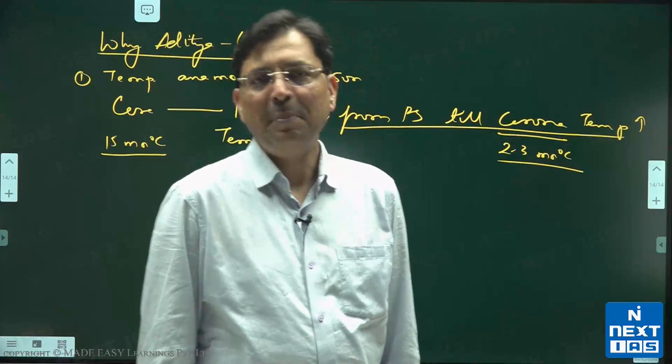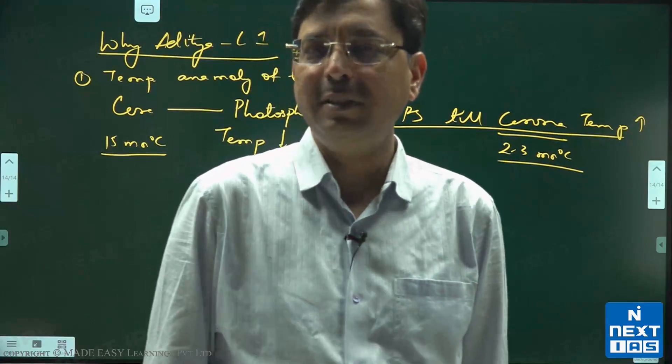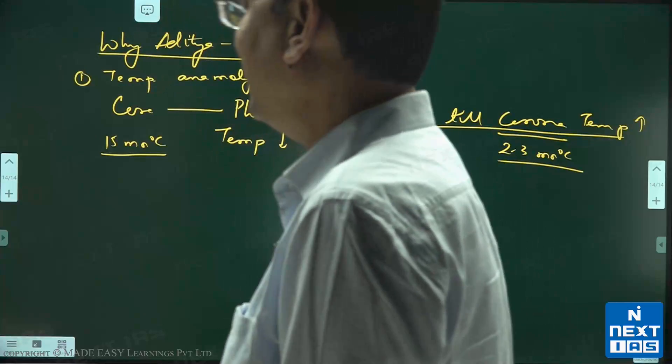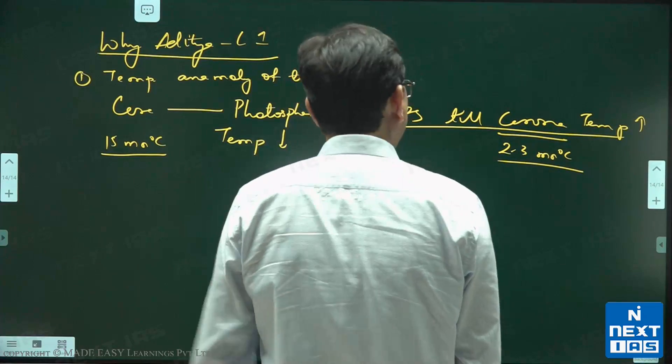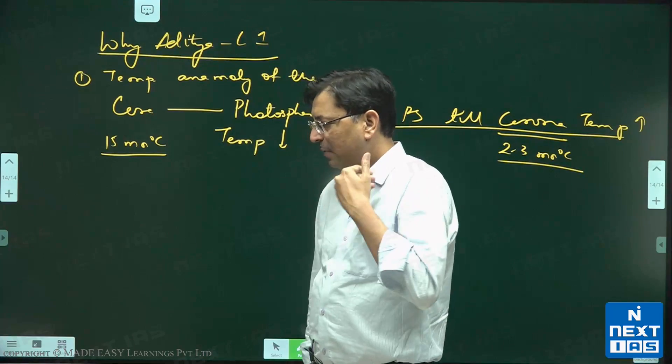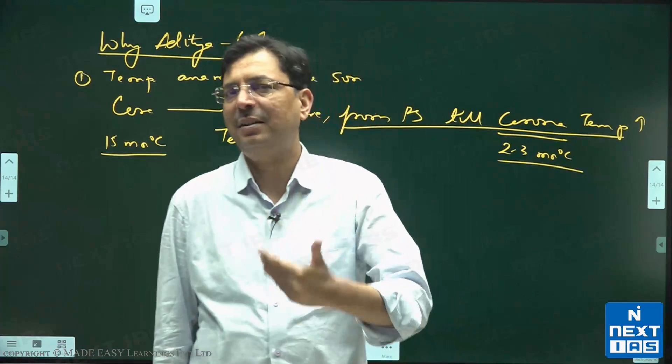This light is because of the movement of charged particles in the magnetic field. And whenever a charged particle accelerates in the magnetic field, obviously there will be electromagnetic waves.